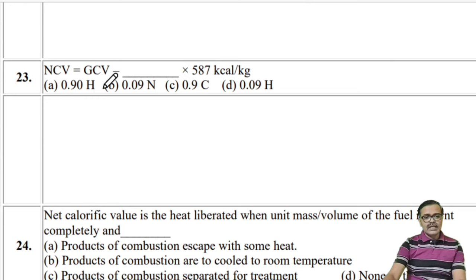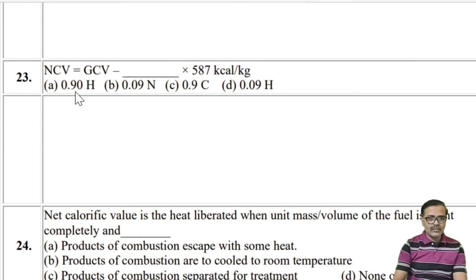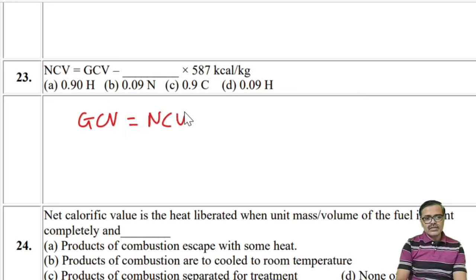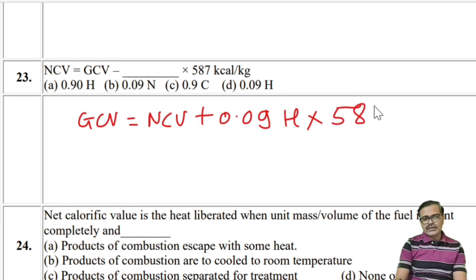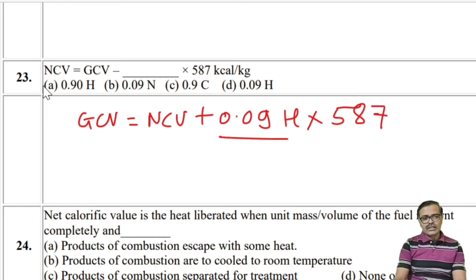The relation between GCV and NCV: GCV = NCV + 0.09 × H × 587 (latent heat in kcal/kg). The formula can be rearranged as NCV = GCV − 0.09 × H × 587. The term asked is 0.09H, so the answer is D (the last option).